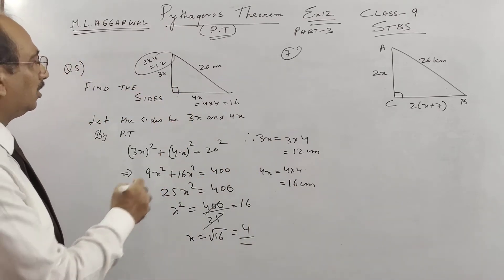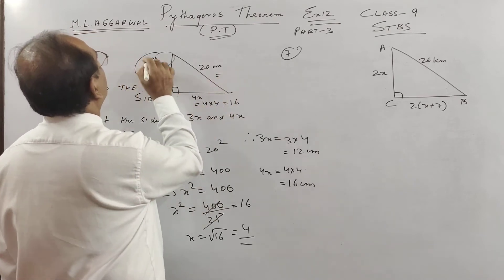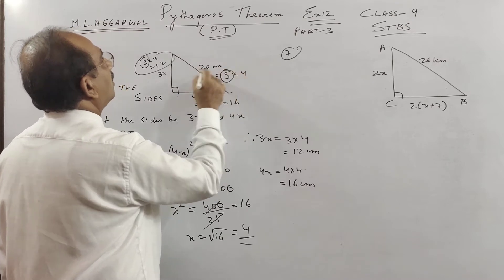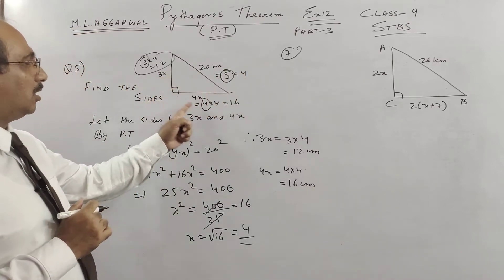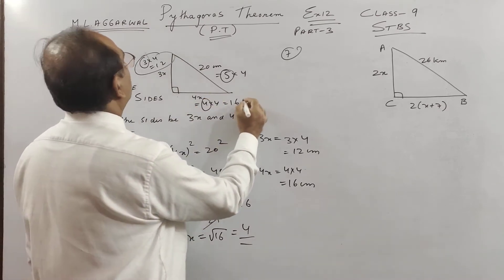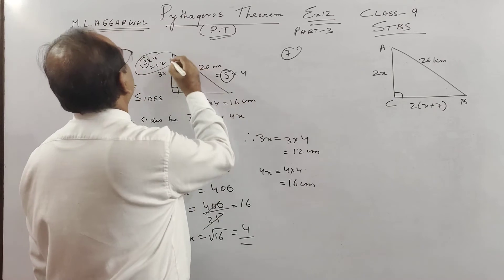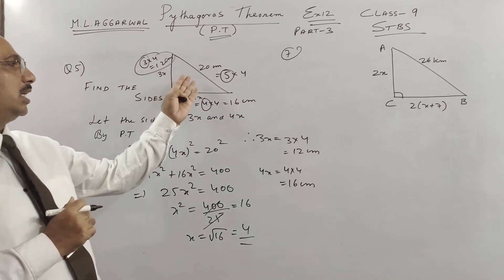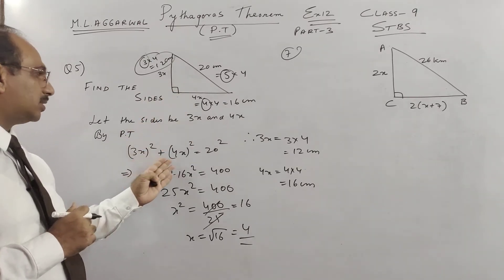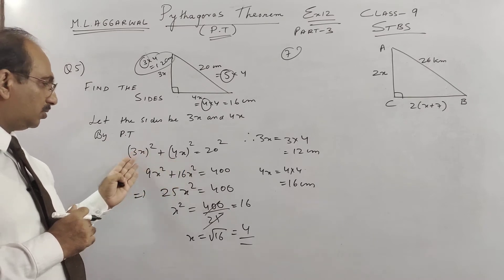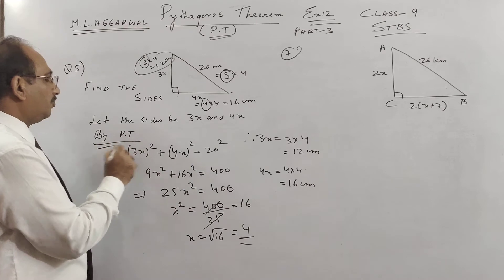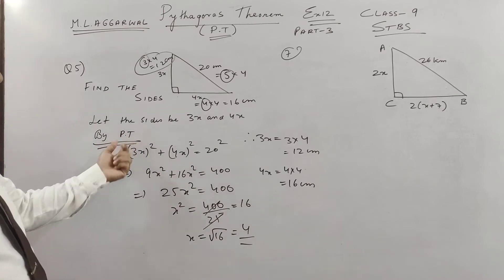Again, if you see children find the sides, this is also if you see a multiple of Pythagorean triplet 3, 4, 5. Each term is multiplied by 4 you get 12, 16 and 20. So this is 16 centimeter and this is 12 centimeter. Once more, one side hypotenuse is given, other two sides are given in ratio. We take them to be 3x, 4x and we apply Pythagoras theorem over here. So write by full word by Pythagoras theorem.